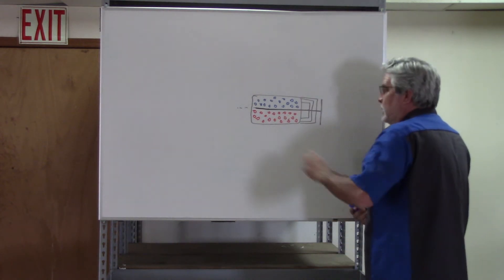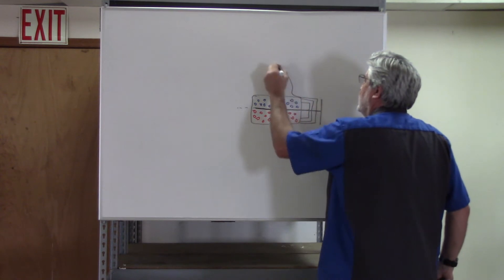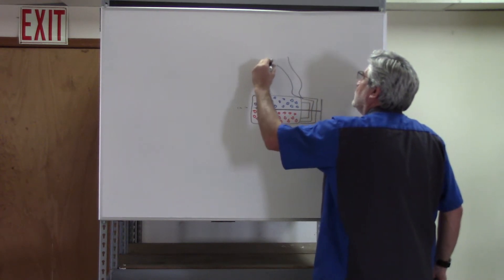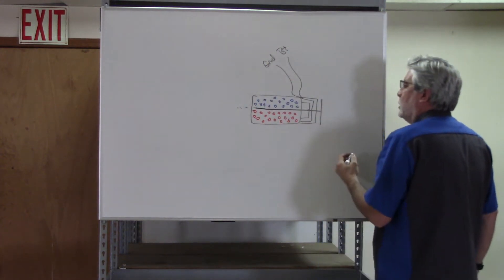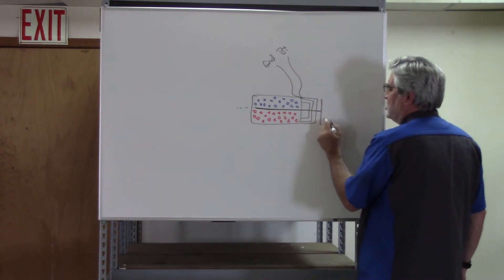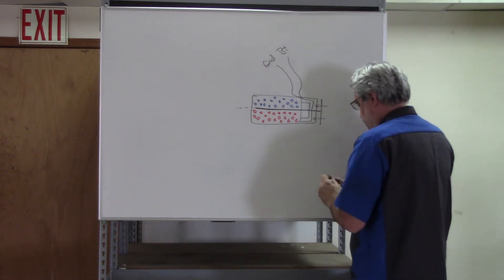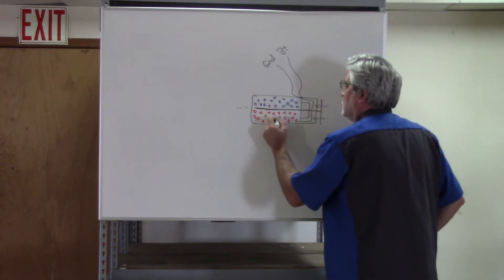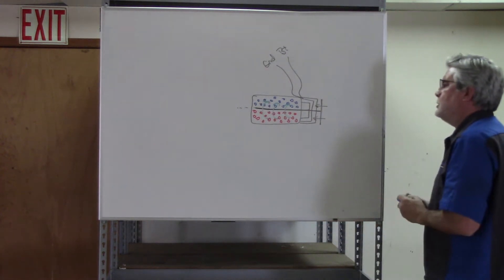The same things have to happen with this compressor as the compressor from our TXV video. We need ground and we need power. Turn the compressor on, create a magnetic field in the clutch coil, force the hub to lock in solid to the pulley, forcing the compressor to start rotating — sucking and compressing.